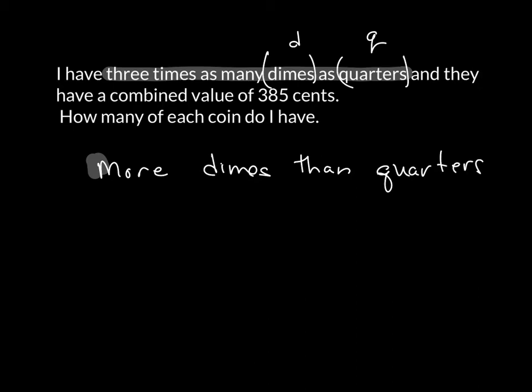So to make dimes and quarters equal, you say the dimes are equal to three times the number of quarters.